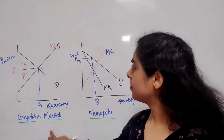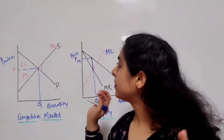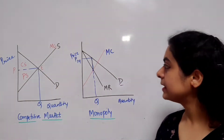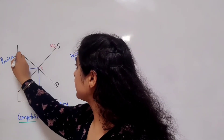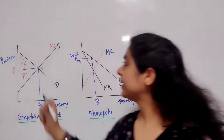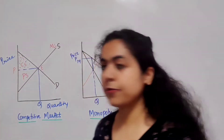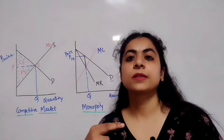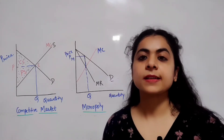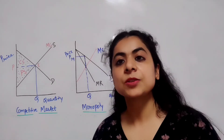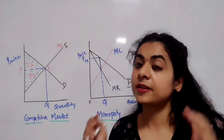In the case of a competitive market, the equilibrium is established where market demand and market supply intersect each other, and this portion represents consumer surplus — the extra benefit enjoyed by the consumer when he has to pay less than his willingness to pay for the product. Producer surplus is the benefit enjoyed by the producer for participating in the market — the amount paid to the seller minus his cost of production. Marginal cost also represents the supply curve for a competitive market.